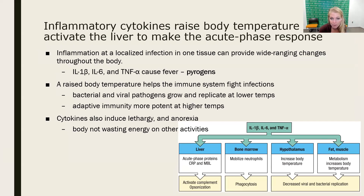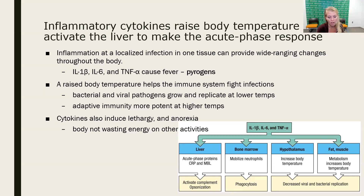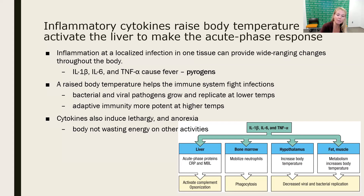These inflammatory cytokines — IL-1β, IL-6, and TNF-alpha — are all involved in increasing inflammation. They act in a very localized fashion so that inflammation doesn't become systemic, but rather is maintained where the infection is actually happening.